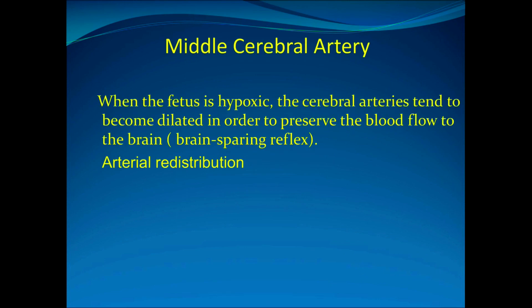The middle cerebral artery becomes abnormal when the fetus is hypoxic. The cerebral arteries tend to become dilated in order to preserve blood flow to the brain because of the brain-sparing reflex. If there is a lack of oxygen, the body sends it all up to the brain, and the rest of the fetal body suffers. So if you have a problem with the placenta, you need to know if that is affecting the baby, and you're only able to see that by sampling vessels within the baby itself. The first one we sample is the middle cerebral artery to see if there's arterial redistribution.